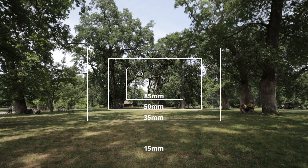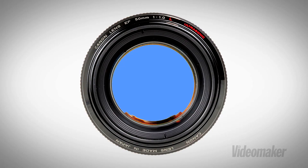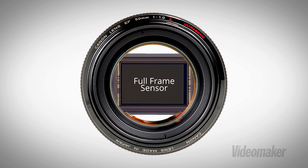Lenses with different focal lengths will allow you to capture a wider or narrower snapshot of a scene. The circular image that your lens projects is known as the angle of coverage. However, your sensor doesn't utilize this entire circle because it's a rectangle. The angle of view is the portion of the lens projection that your sensor actually captures — this can also be referred to as the field of view.